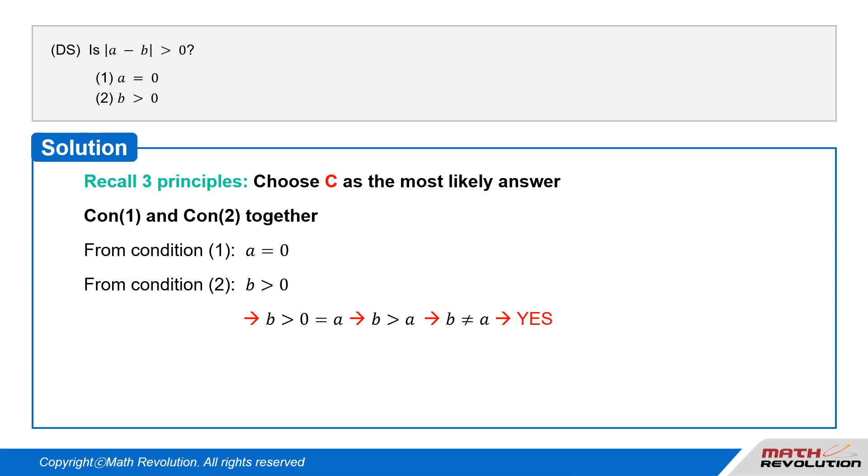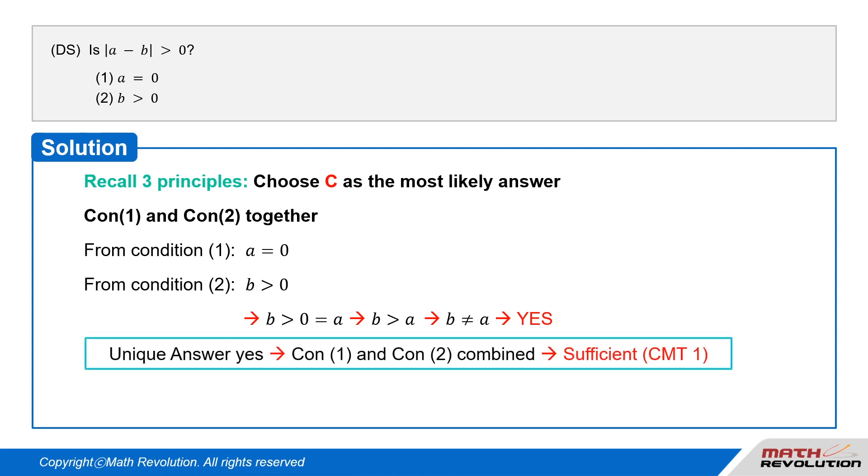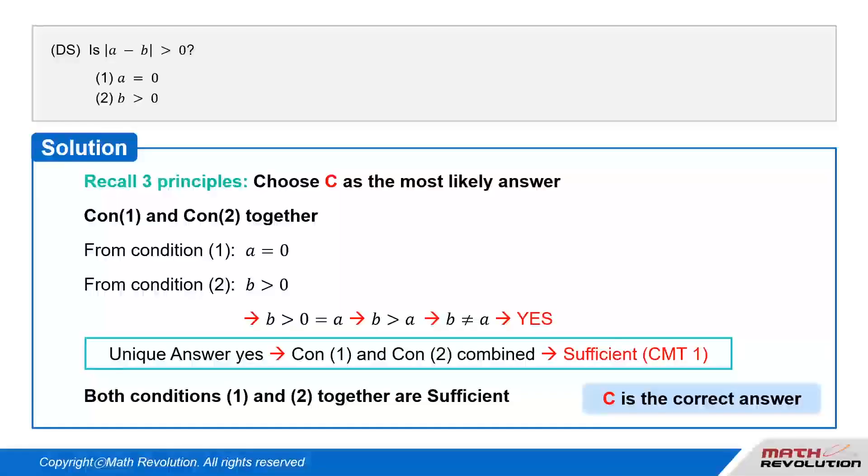Therefore, b is not equal to a, and we get yes as the answer. The answer is unique, yes, so conditions 1 and 2 combined are sufficient. By the common mistake type 1, which means the answer must be in terms of unique yes or no, both conditions 1 and 2 together are sufficient. So C is the correct answer. Answer C.